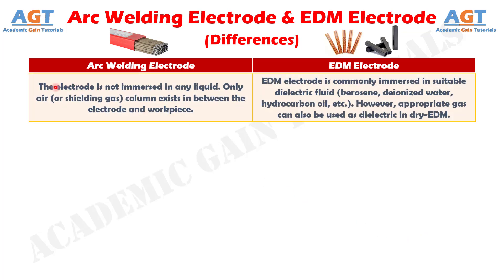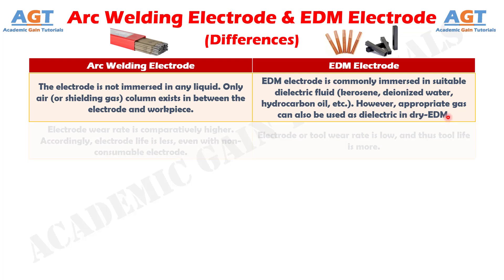Number 5: arc welding electrode is not immersed in any liquid — only air or shielding gas exists between the electrode and workpiece, whereas electric discharge machining electrode is commonly immersed in suitable dielectric fluid such as kerosene, deionized water, hydrocarbon oil, etc. However, appropriate gas can also be used as dielectric in dry electric discharge machining.